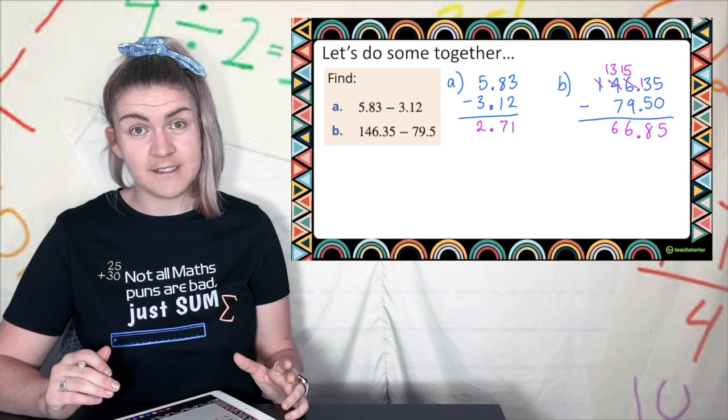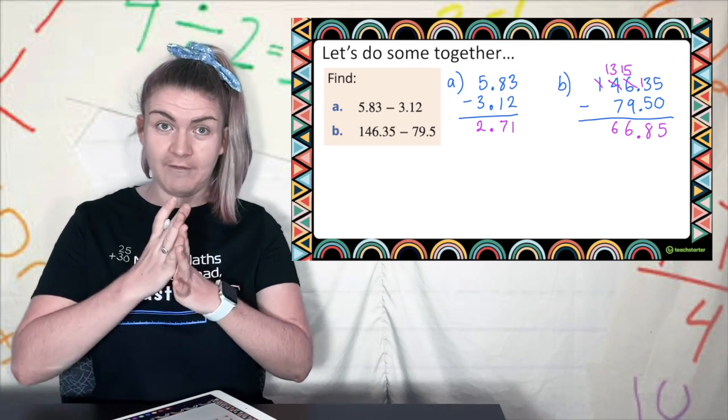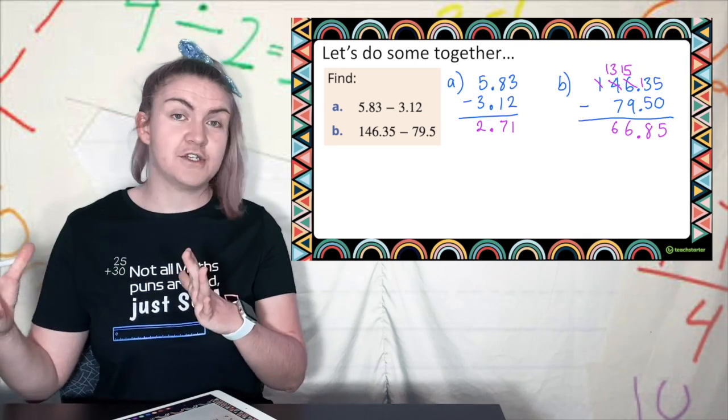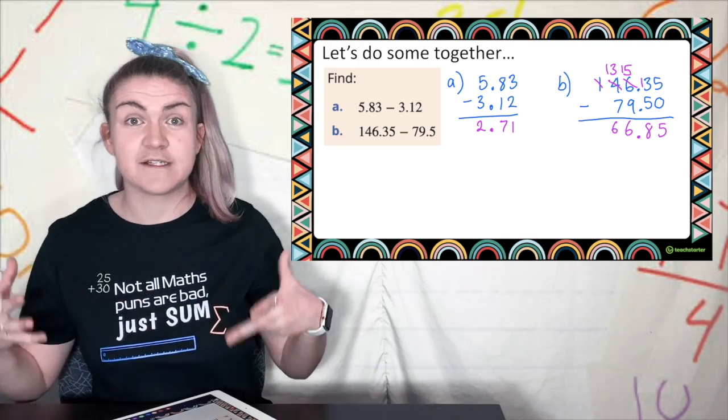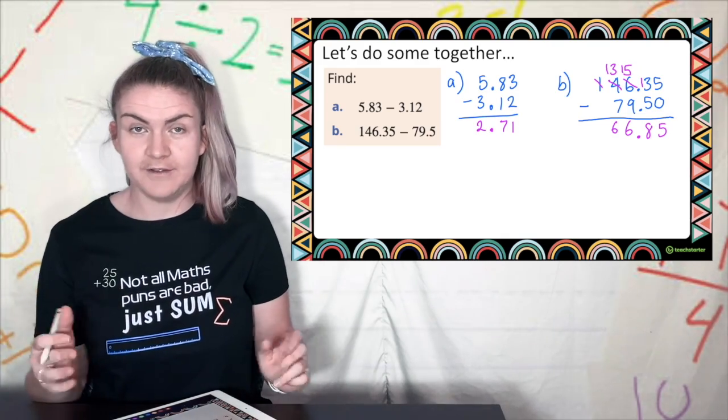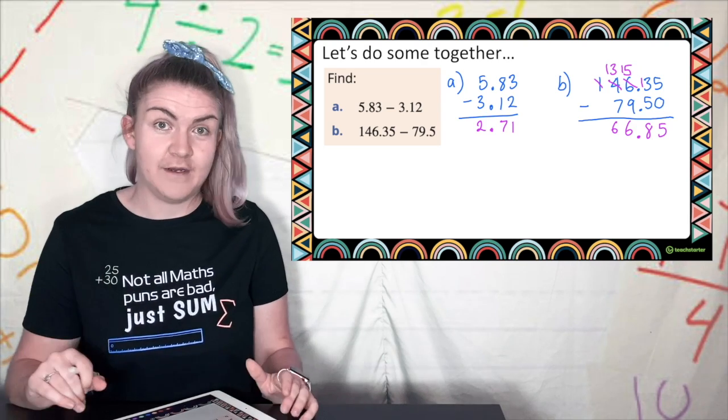Remember our reasonableness check is just so we can make sure that we haven't put the decimal place in the wrong position and if we've done that it's going to be very different so it would be 668 which wouldn't be close to 70 so that's what we're doing with our reasonable check.